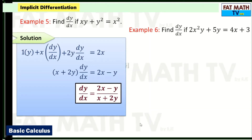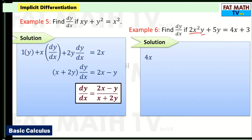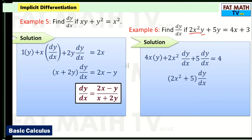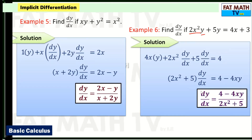Example 6: Find dy/dx if 2x squared y plus 5y equals 4x plus 3. Apply the product rule to 2x squared times y: derivative of 2x squared is 4x times y, plus 2x squared times dy/dx. The derivative of 5y is 5 dy/dx, and the derivative of 4x is 4. Factoring out dy/dx: (2x squared plus 5) dy/dx equals 4 minus 4xy. Therefore dy/dx equals (4 minus 4xy) over (2x squared plus 5).